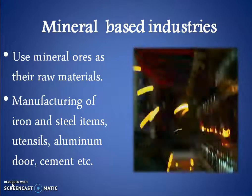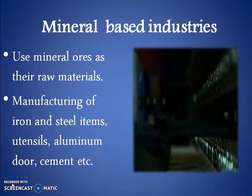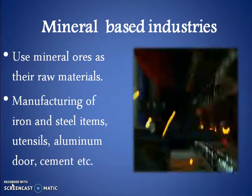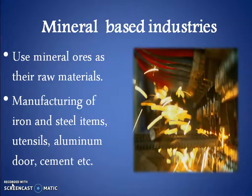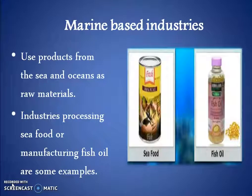And that's why they are also termed as the basic industries. For example, manufacturing of iron and steel items, utensils, aluminum doors, cement, etc. And fourth, marine-based industries. Such type of industries use products from the sea and ocean as raw material. Industries processing seafood or manufacturing fish oil are some examples of marine-based industries.